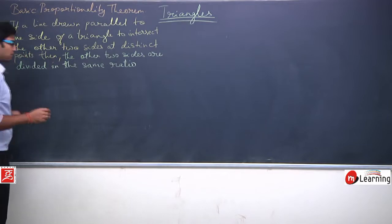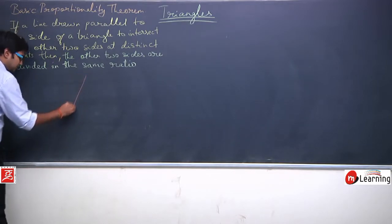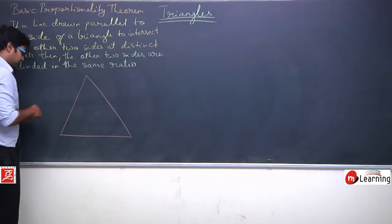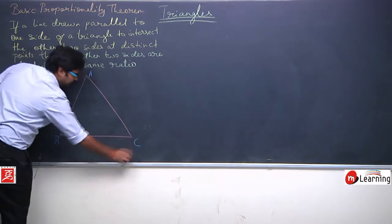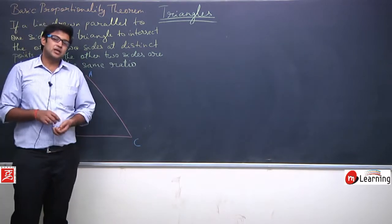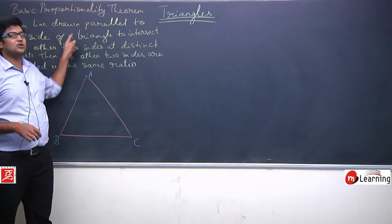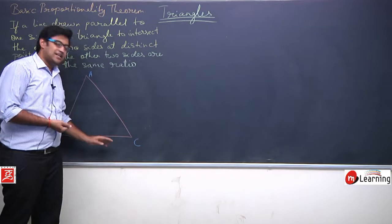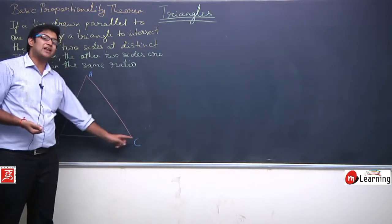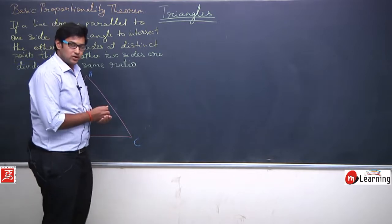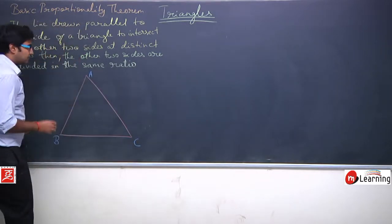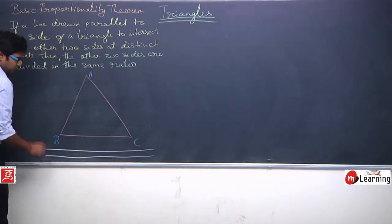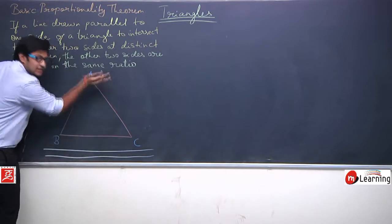Let us understand this by diagram. If I draw a triangle ABC, we need to draw a line parallel to one of the sides. Let's say side BC. I want to draw a line parallel to BC. And there can be many such lines — infinite number of parallel lines can be drawn.